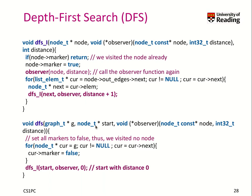We use the linked information about the graph — we take the graph data structure, iterate over all the nodes in the list, and set the marker to false. Now we start the depth-first search. If the node has a marker, we are done because we visited it already. Otherwise we set the marker to true, call the observer, and traverse all the outgoing edges, calling DFS recursively with a distance of plus 1.